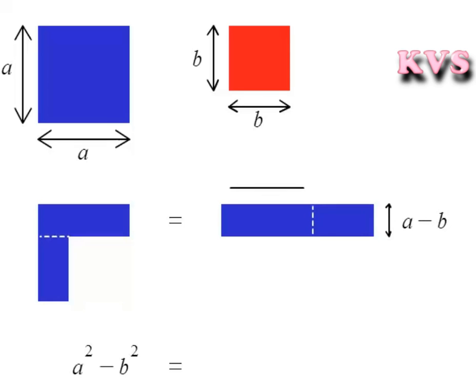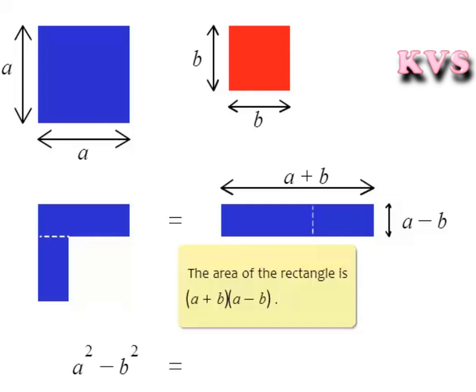If we arrange this figure like this, we get a rectangle having length A plus B and breadth A minus B.